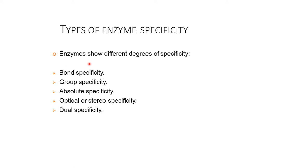Enzymes show different degrees of specificity. These are: bond specificity, group specificity, absolute specificity, optical stereo specificity, and dual specificity.